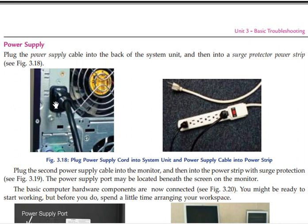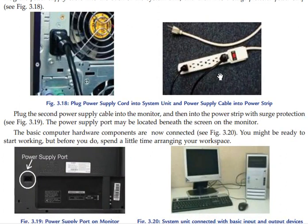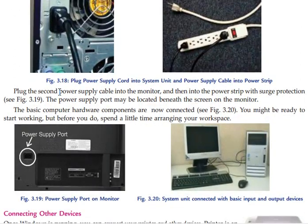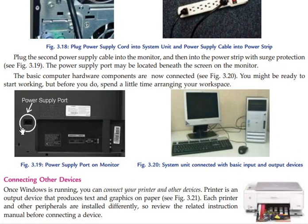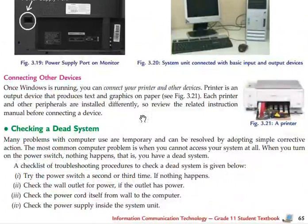If you want to use a portal or a system, you can use a power protector or surge divider. You can also use a device to monitor the network. The network is connected to the network. Then, connecting other devices — if you want to connect with a new printer, you can use a port to connect the keyboard.